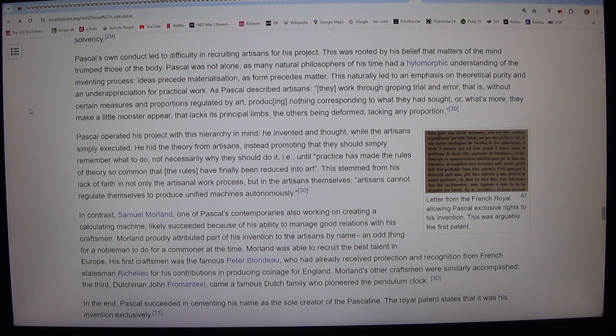In contrast, Samuel Morland, one of Pascal's contemporaries also working on creating a calculating machine, likely succeeded because of his ability to manage good relations with his craftsmen. Morland proudly attributed part of his invention to the artisans by name, an odd thing for a nobleman to do for a commoner at the time. Morland was able to recruit the best talent in Europe.